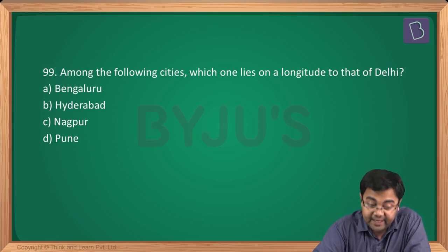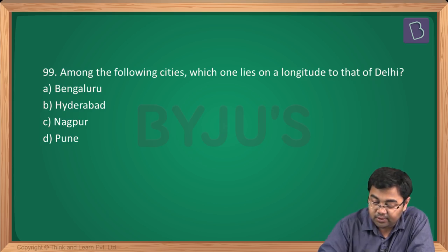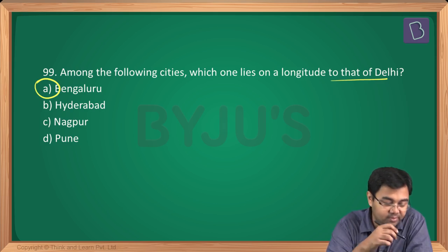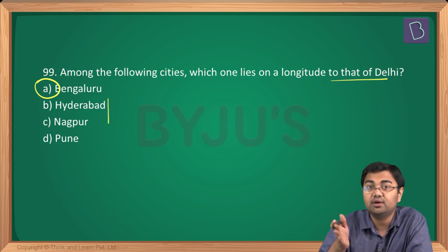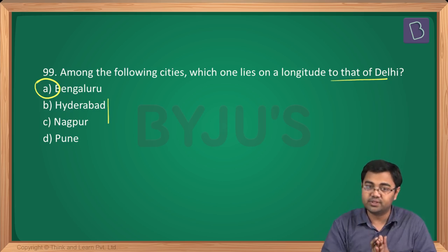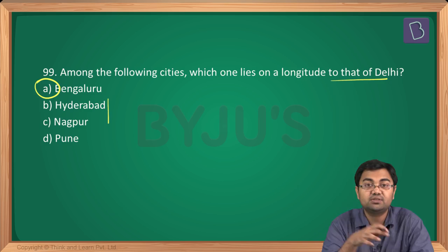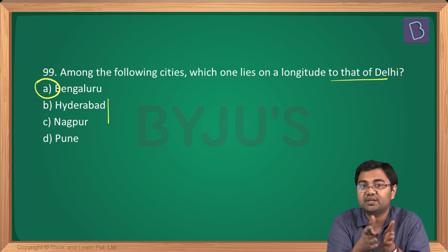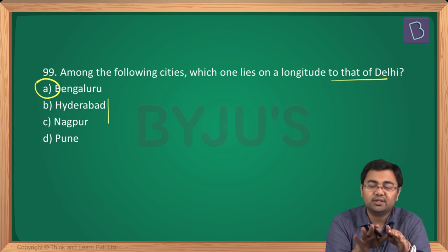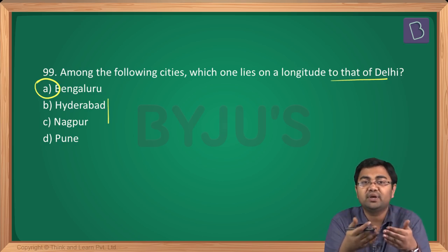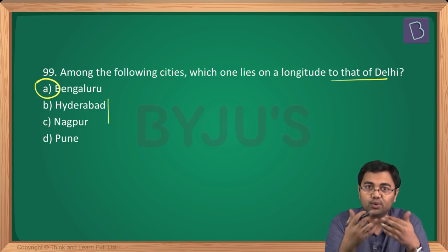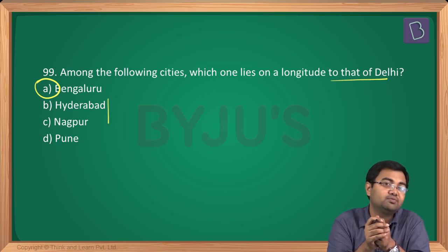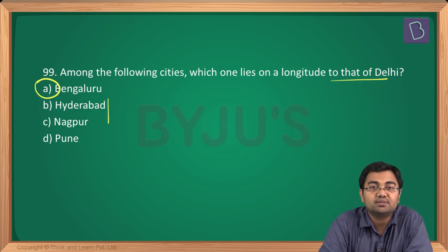Question number 99: among the listed cities, which one lies on the same longitude as Delhi? This was one of the most difficult questions, but the answer is Bengaluru — option A. Even Hyderabad is close, but Bengaluru is the closest in longitude to Delhi. With this we come to the end of all questions related to Science and Technology, Geography and Environment. Geography and environment were not easy this year, while science and technology questions were easier, coming from well-known current affairs. Thank you very much.